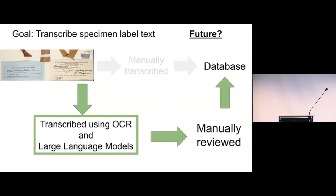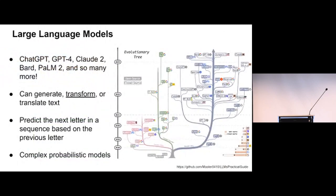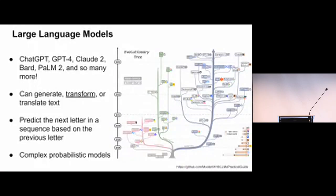Today we'll be talking about the transcription and OCR process first. Large language models are used in just about everything right now, and there are many different versions. But at the end of the day, they all generate, transform, or translate text, doing so by predicting the next letter in a sequence based on the previous letter. They're highly complicated, probabilistic models, and we can use them to do a lot of different things.